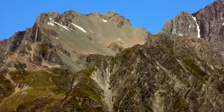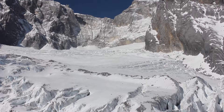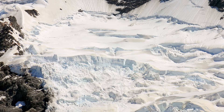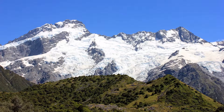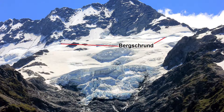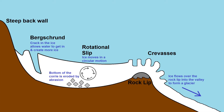Corries have a rounded hollow with a steep back wall. Corries form when snow accumulates in hollows on mountainsides, slowly accumulating enough to turn into ice. This ice slowly gouges out a steep back wall through the processes of freeze-thaw and plucking. Large crevasses on the top of the ice called a bergschrund allow water to flow onto the ice, where it freezes to create more ice. The bottom of the corrie is eroded by abrasion as the ice moves in a circular motion known as rotational slip.